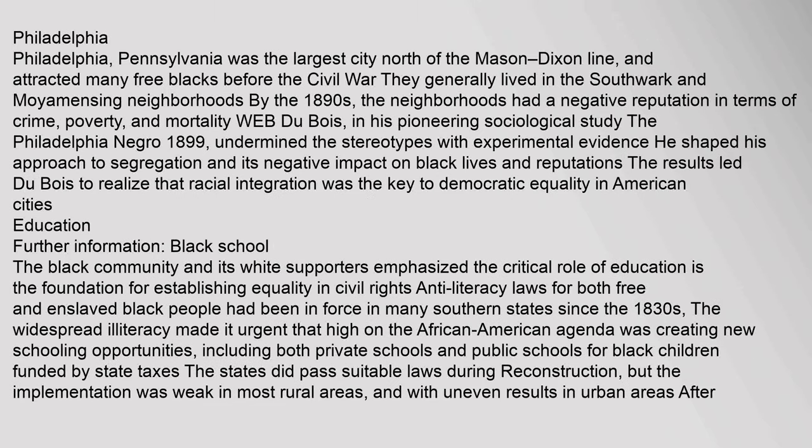Philadelphia, Pennsylvania was the largest city north of the Mason-Dixon Line and attracted many free blacks before the Civil War. They generally lived in the Southwark and Moyamensing neighborhoods. By the 1890s the neighborhoods had a negative reputation in terms of crime, poverty, and mortality. W.E.B. Du Bois, in his pioneering sociological study The Philadelphia Negro (1899), undermined the stereotypes with experimental evidence. He shaped his approach to segregation and its negative impact on black lives, and the results led Du Bois to realize that racial integration was the key to democratic equality in American cities.